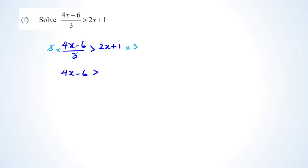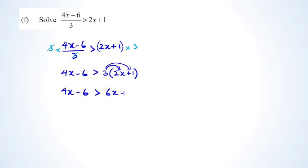Be careful — a lot of people only multiply 3 with 2x and write 6x plus 1. It's a common mistake because people forget the 3 is being multiplied by the whole bracket. So expanding correctly: 4x minus 6 is greater than 6x (because 3 times 2x is 6x), and 3 times 1 is 3.